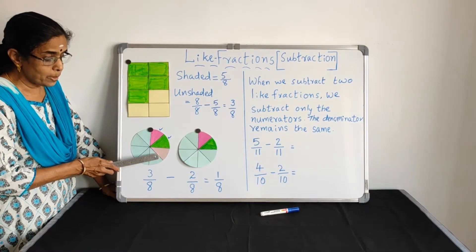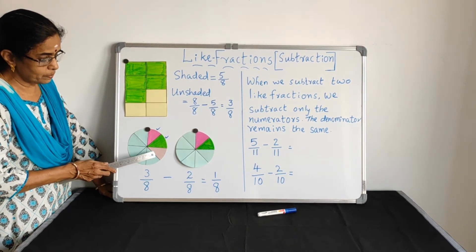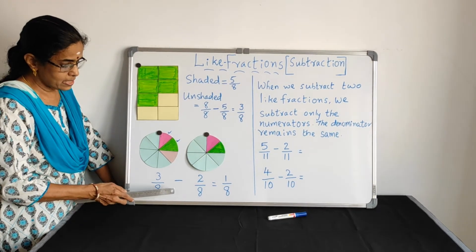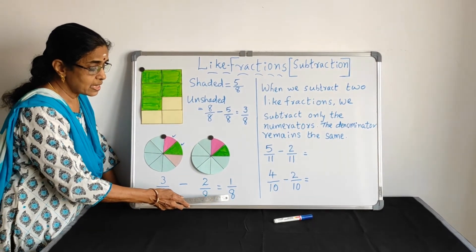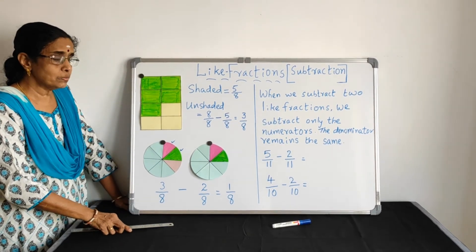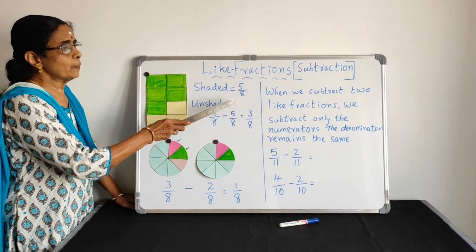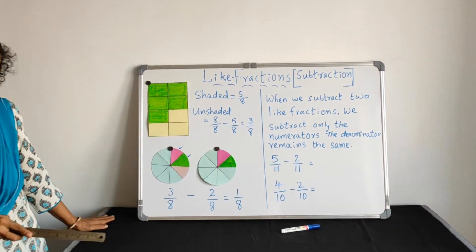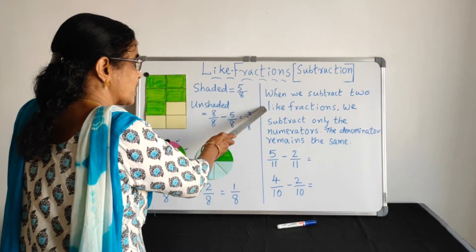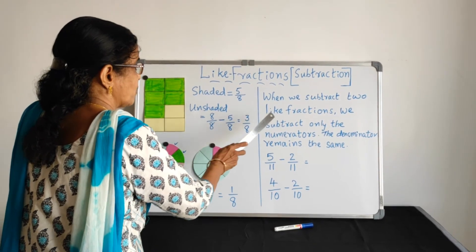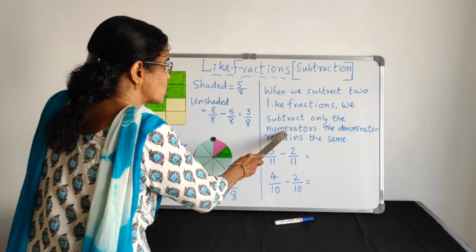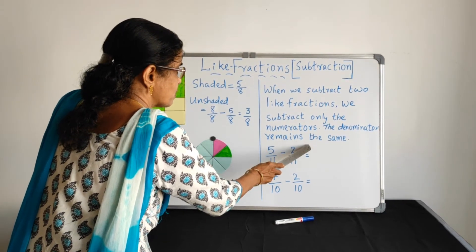So how much is left for Binu? Closely observe. This portion is left. So 3 by 8 minus 2 by 8, he is getting only 1 by 8. Now, the rule is very simple. No need of memorizing. Just try to understand. When we subtract 2 like fractions, what are like fractions? Denominators are same. When we subtract 2 like fractions, we subtract only the numerators. The denominator remains the same.